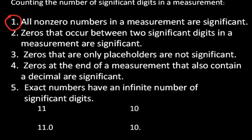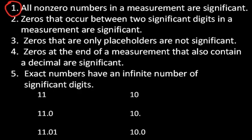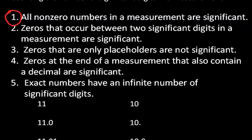And exact numbers have an infinite number of significant digits. So an exact number would be, for example, if you're counting the number of people in the classroom, there's five. There's not 5.0 or 5.2, there's just five. And so we don't even factor in the rules for significant digits when we're considering exact numbers.